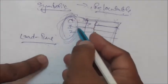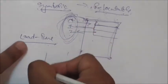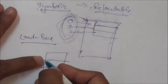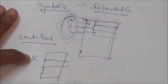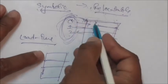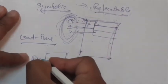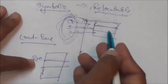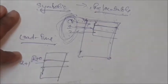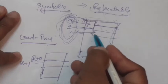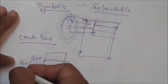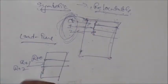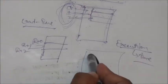These relocatable addresses are zero, one, two, three, and so on. Suppose this program is stored in main memory and the starting location where this program is stored is R. Then the address of the first instruction will be R plus zero, the address of the second instruction will be R plus one, the address of the third instruction will be R plus two, and so on. In this way the final binding of relocatable addresses is done.